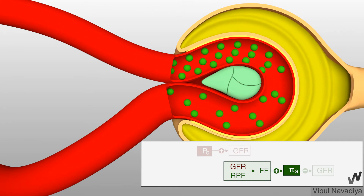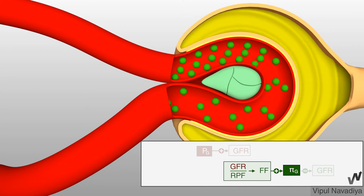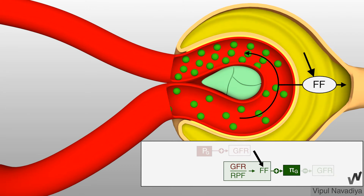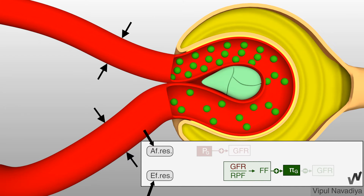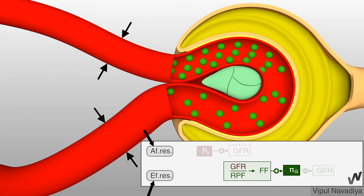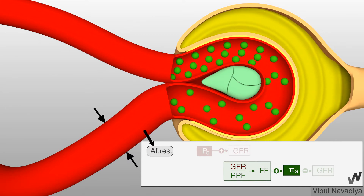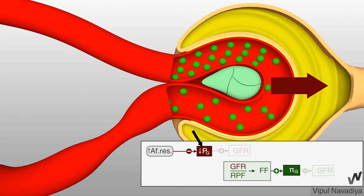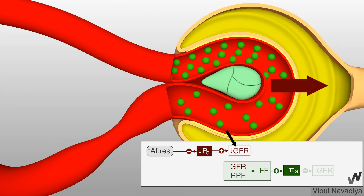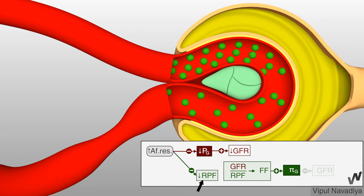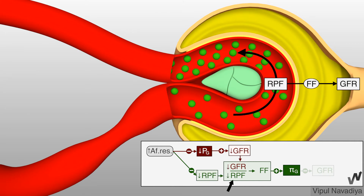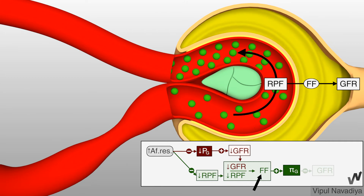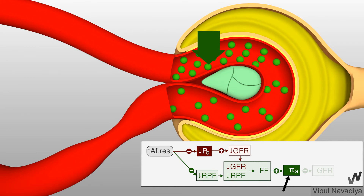Now let's expand this flowchart further. Filtration fraction ultimately depends on resistance of afferent and efferent arterioles. When afferent arteriolar resistance increases, capillary hydrostatic pressure falls, resulting in a reduction in GFR. It also reduces renal plasma flow. Since both GFR and renal plasma flow are decreasing, filtration fraction is relatively unaffected, so there is not much change in osmotic pressure with changing afferent arteriolar resistance.